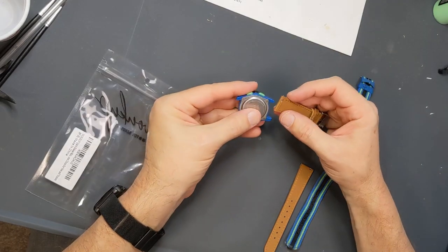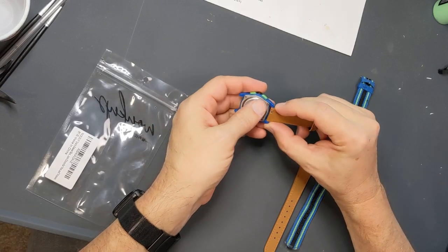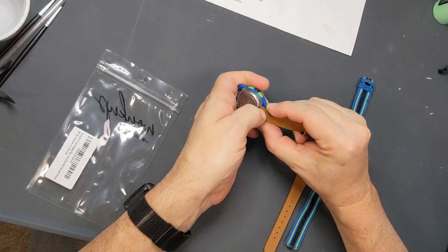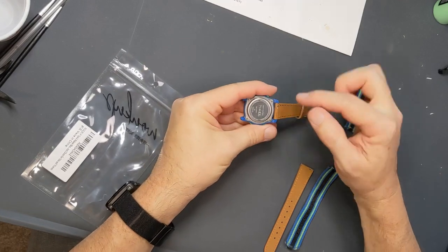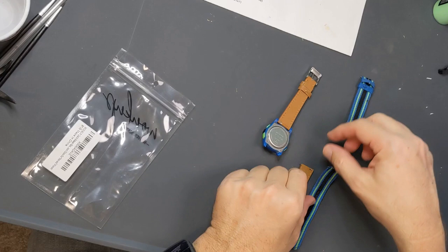So to put them in, you just pop in this side that doesn't have the lever and then you have to push this down while getting that through. And then you have to find the hole. When you find the hole, it'll go click and it'll click into place. So that guy's on there.